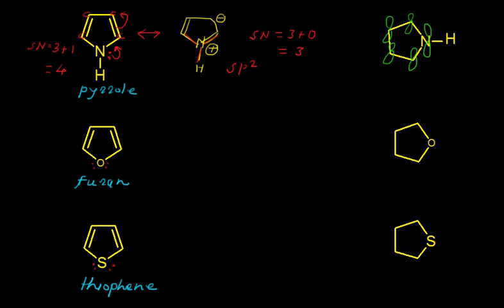This means the lone pair of electrons on this nitrogen is actually delocalized into the ring. I can show this lone pair getting delocalized into the ring like this. Now we calculate the total number of pi electrons: 2 plus 2 plus 2 from the lone pair gives us 6 pi electrons. This means pyrrole follows Hückel's rule for aromaticity, and that is why pyrrole is aromatic in nature.